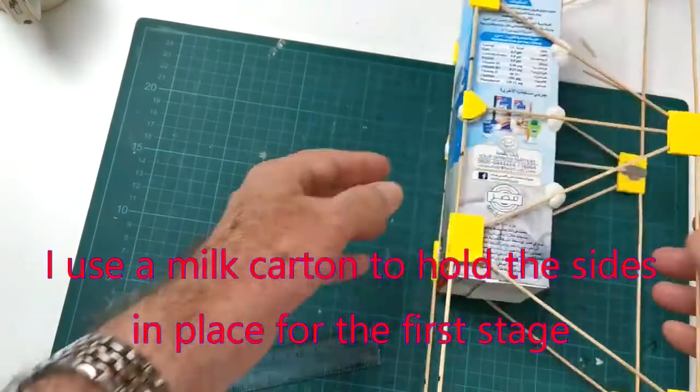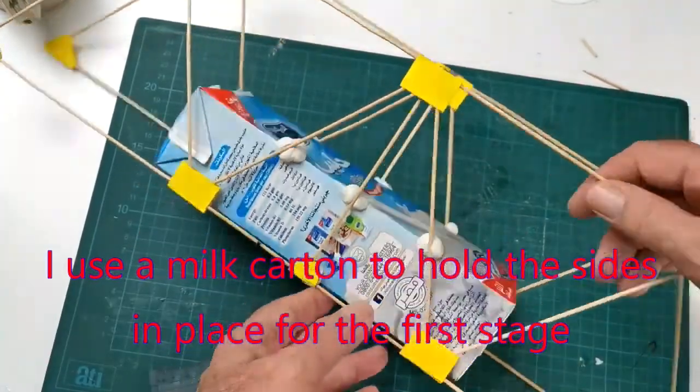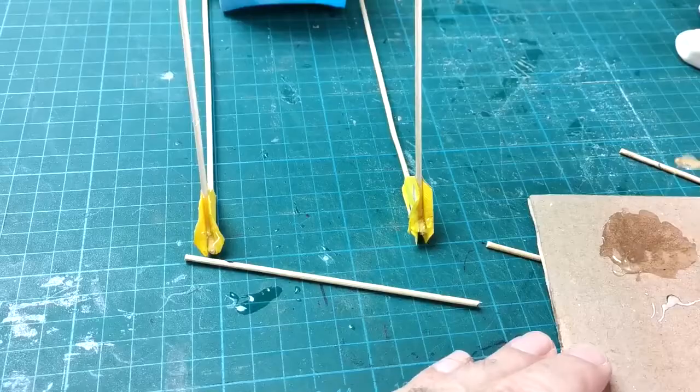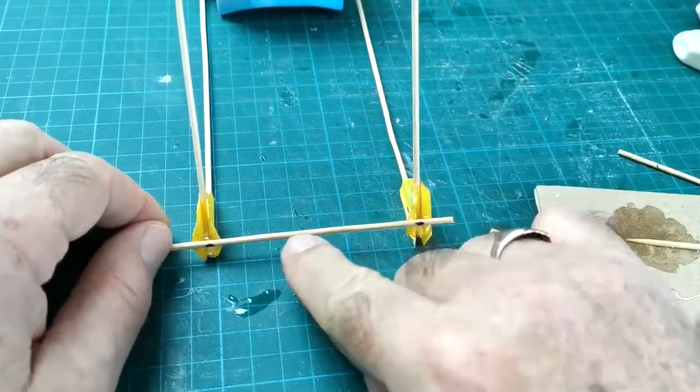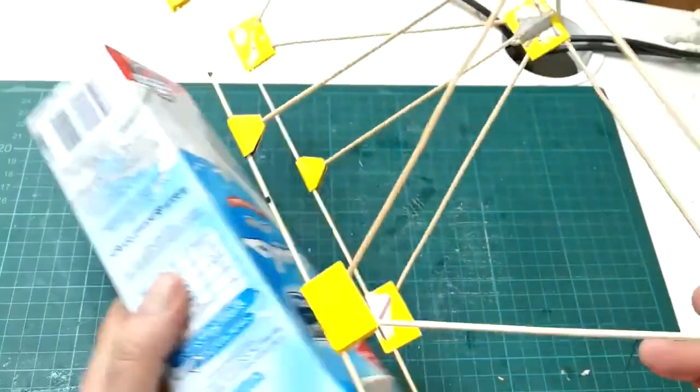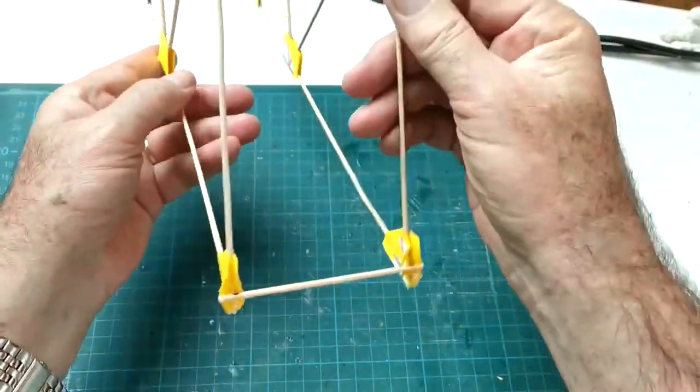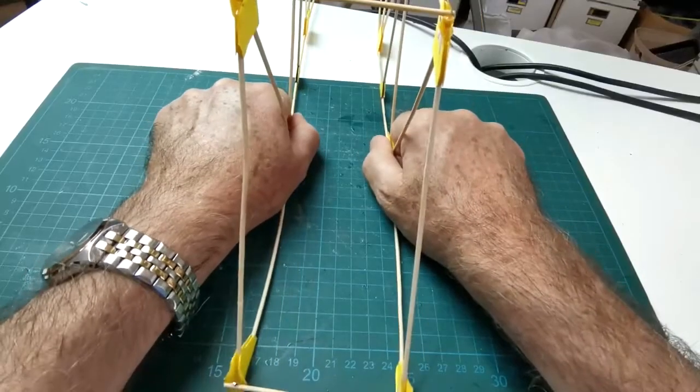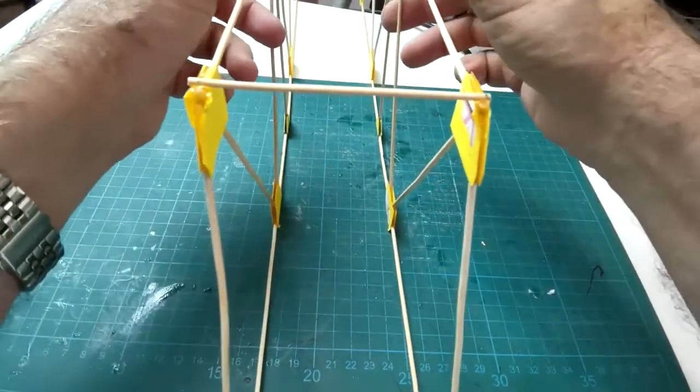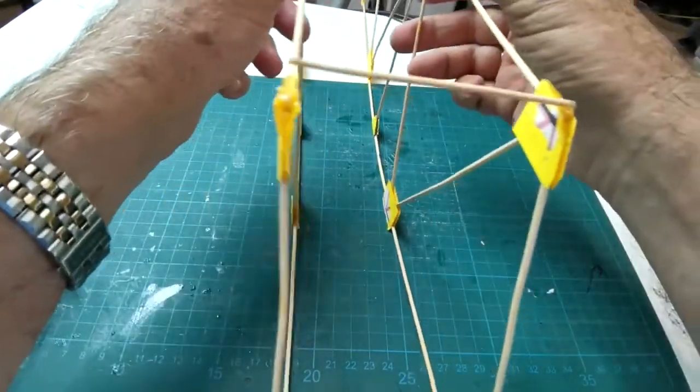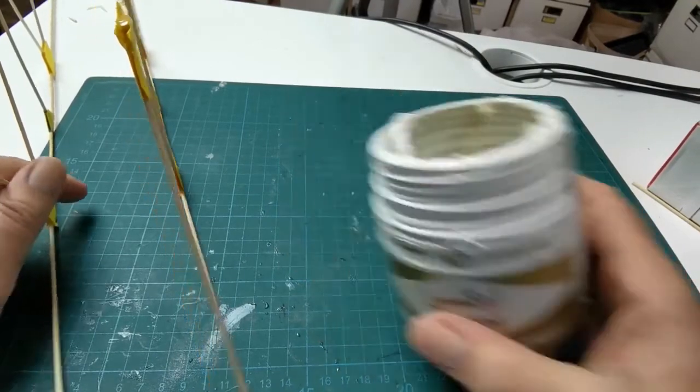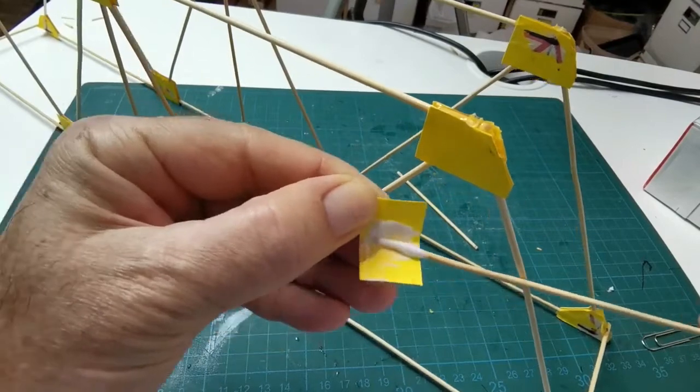Now that the second side is complete, the next step is to put the two sides together. As you can see, the bridge is now rigid longitudinally where it is triangulated, but not in the other two directions. This is where I change to white wood glue, clamping with 50 millimeter paper clips and small binder clips to make the bridge rigid in all directions.